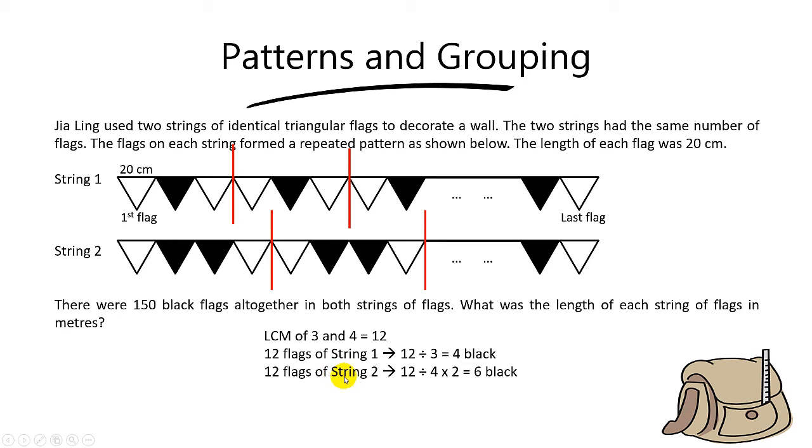While for string 2, to find number of black flags, you take 12 divide by 4, then you multiply by 2. Because in string 2, every 4 will have 2 black. So in 12 flags of string 2, you have 6 black.